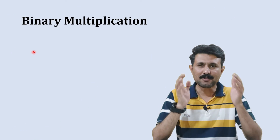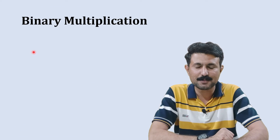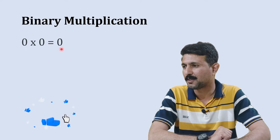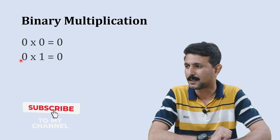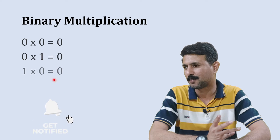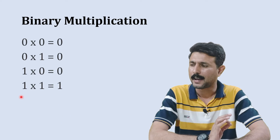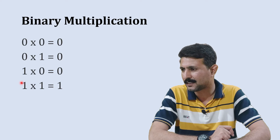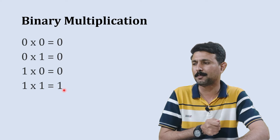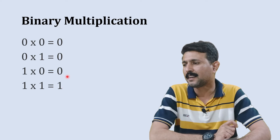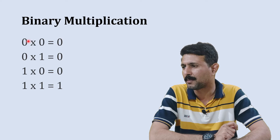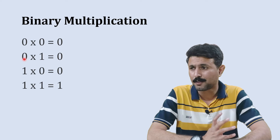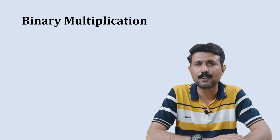The next topic is binary multiplication. When you multiply 0 by 0 you get 0; 0 by 1 gives 0; 1 by 0 gives 0; and 1 by 1 gives 1. There is only one combination that gives 1 — in the remaining three combinations the answer is 0.